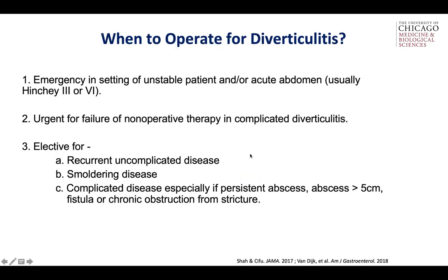So when to operate for diverticulitis? Certainly in the emergency setting — if the patient comes in unstable with an acute abdomen, they go emergently to the operating room. In the urgent setting, where a complicated diverticulitis patient is not getting better, continues to have abscesses, and is not getting well drained by IR, those patients need to go urgently, usually during that admission. Electively, for recurrent uncomplicated diverticulitis and for smoldering disease — patients who really don't get better between episodes — they have peaks and valleys but in the valleys are not back to their baseline. Those patients will benefit from a sigmoid resection.